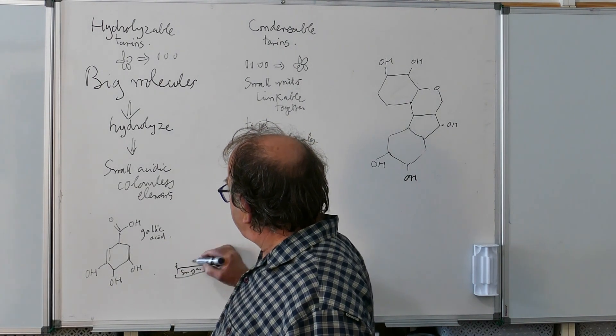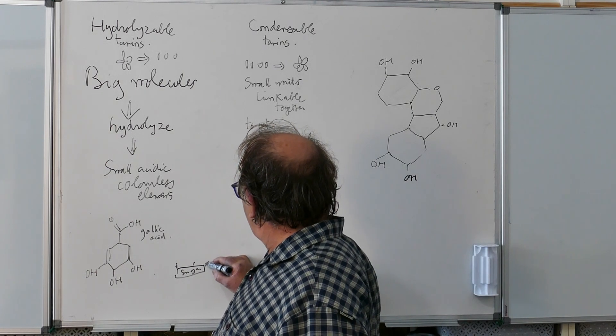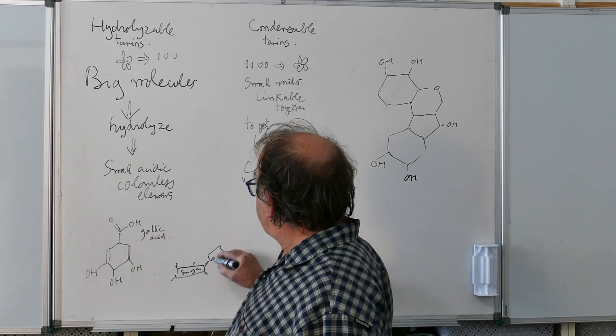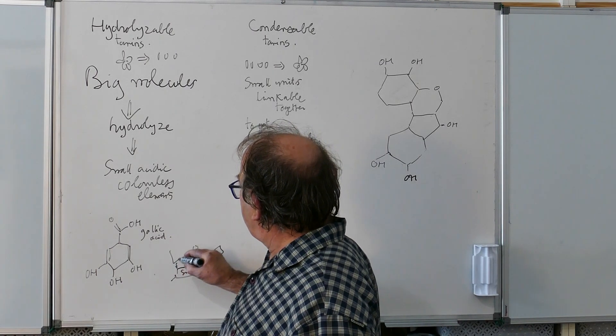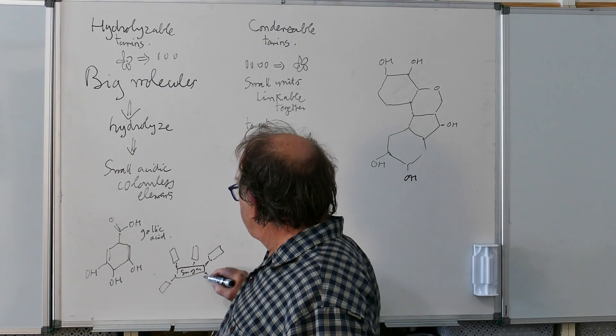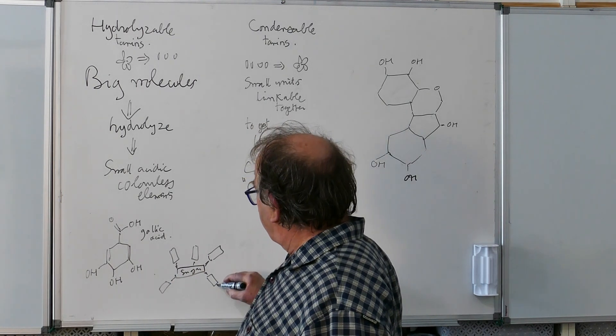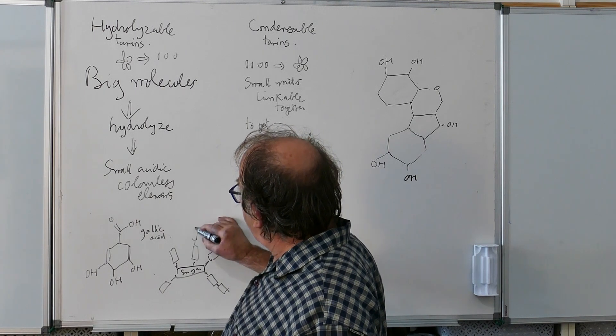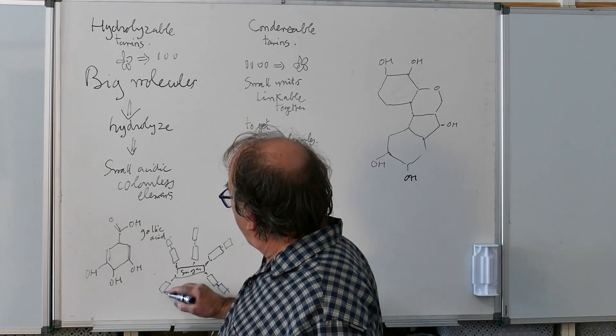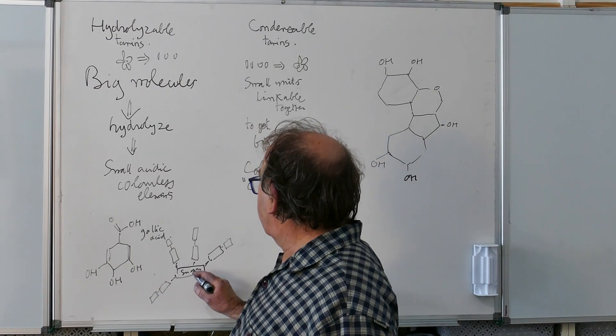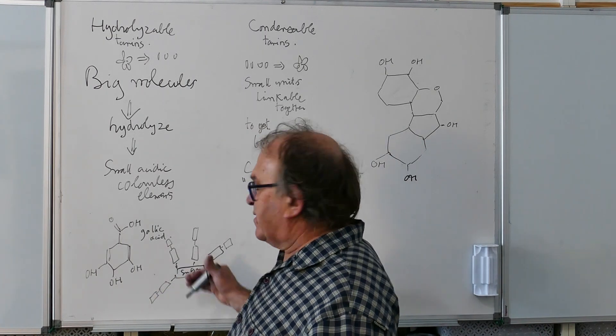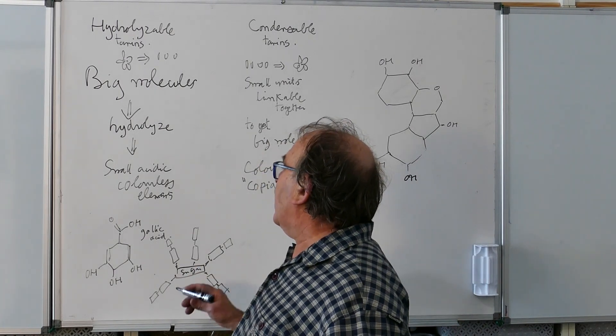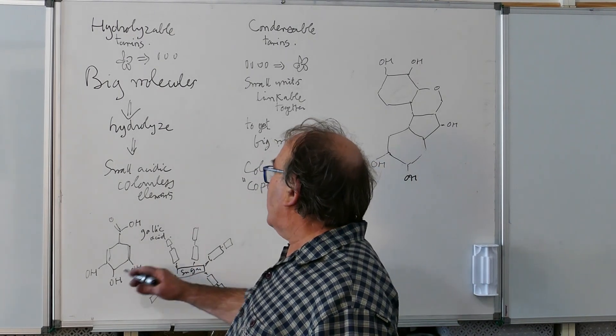And every hydroxyl of the sugar will be grafted with one of these units, so, that's the gallic acid here. And then, a second one could be linked on the one, so, it makes a kind of big molecule. So, this is in the plant, and this could be separated during the dye operation to make small units.